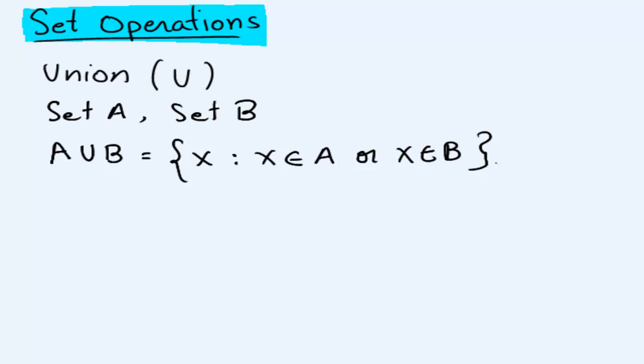Let's look at an example. Let's say our set A has in it the numbers 1, 2, 3, and 4. And our set B has in it the numbers 3, 4, 6, and 8.